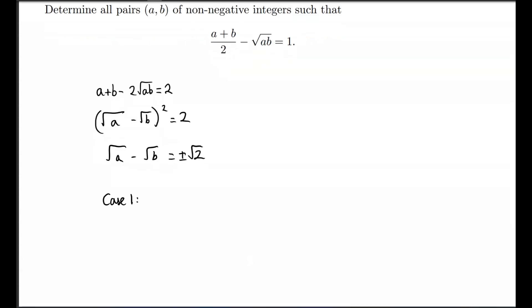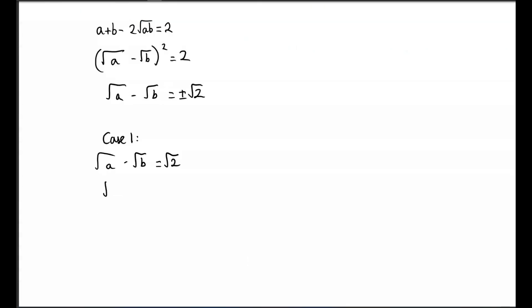Let's consider case 1, when √a - √b = √2. Rearranging for a, we get √a = √2 + √b. Now squaring both sides, we get a = (√2 + √b)², which we know is 2 + 2√(2b) + b.